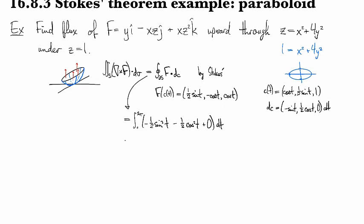And that boils down to just being -1/2 the integral zero to 2π dt, using good old Pythagoras, and that gives us -π.